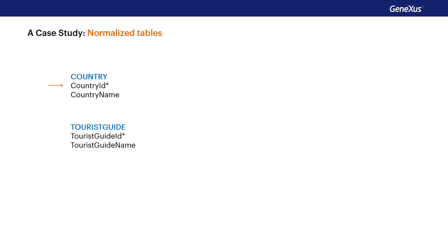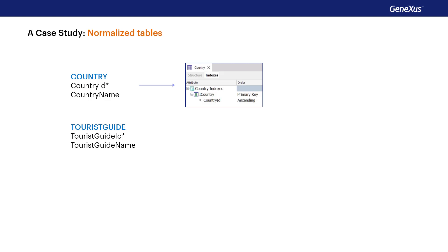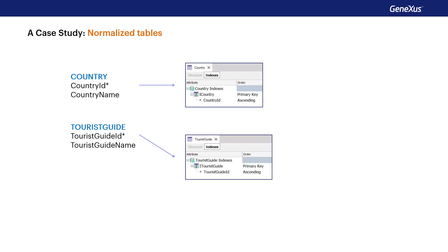The country table has CountryID as the primary key, and CountryName as the secondary attribute. Over this table, GeneXus will create the primary index by CountryID. Remember that GeneXus automatically creates the primary indexes to control the uniqueness of the primary key and to efficiently perform the referential integrity checks. The tourist guide table has TouristGuideID as primary key and TouristGuideName as secondary attribute, and GeneXus will create the corresponding primary index by the TouristGuideID attribute.